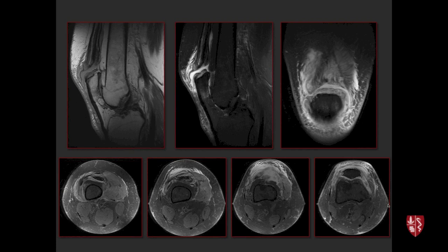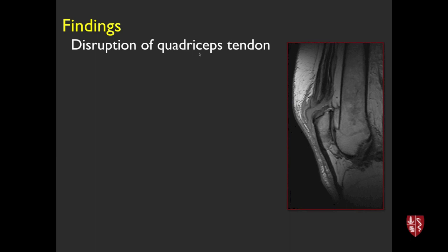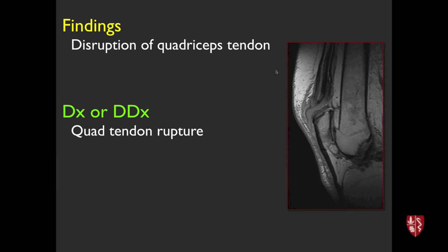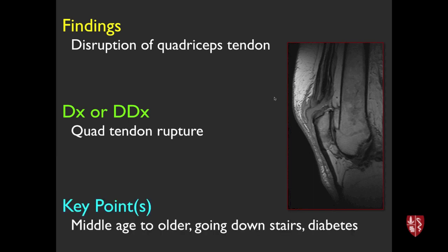Older man in his 60s with knee pain. Sagittal MRI shows disruption of the quadriceps tendon — fluid-filled gap, with the patella visible below. This is high-grade tearing, essentially a quad tendon rupture. Fairly common in middle-age to older folks, often occurring going down stairs. Patients with diabetes or pre-existing tendon problems are probably at higher risk.